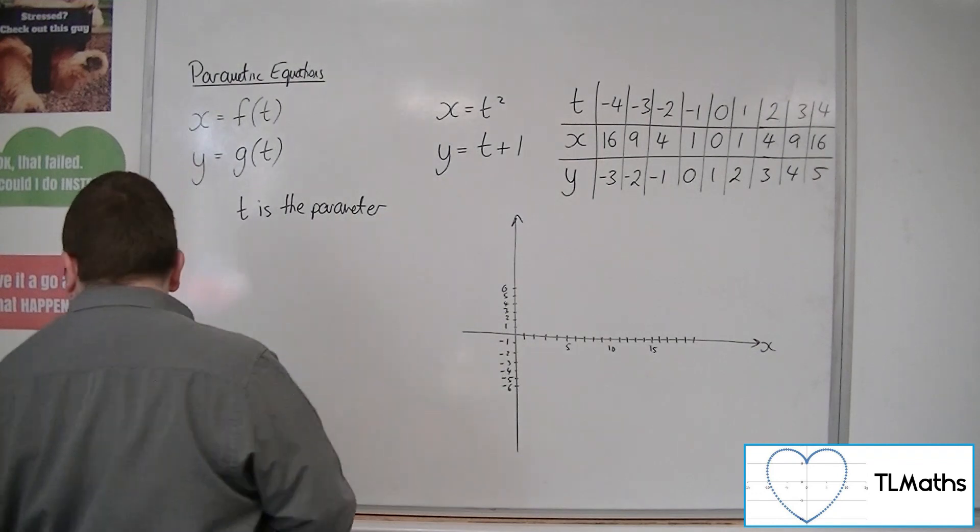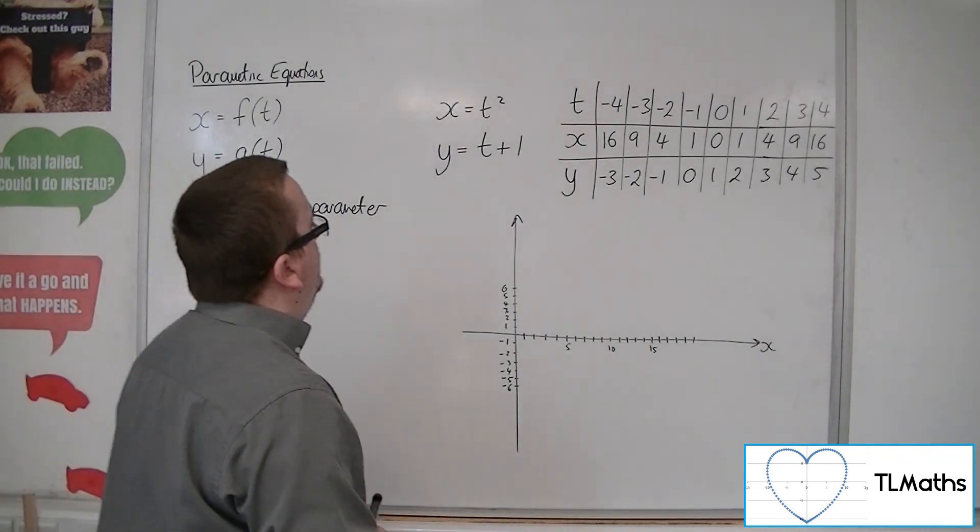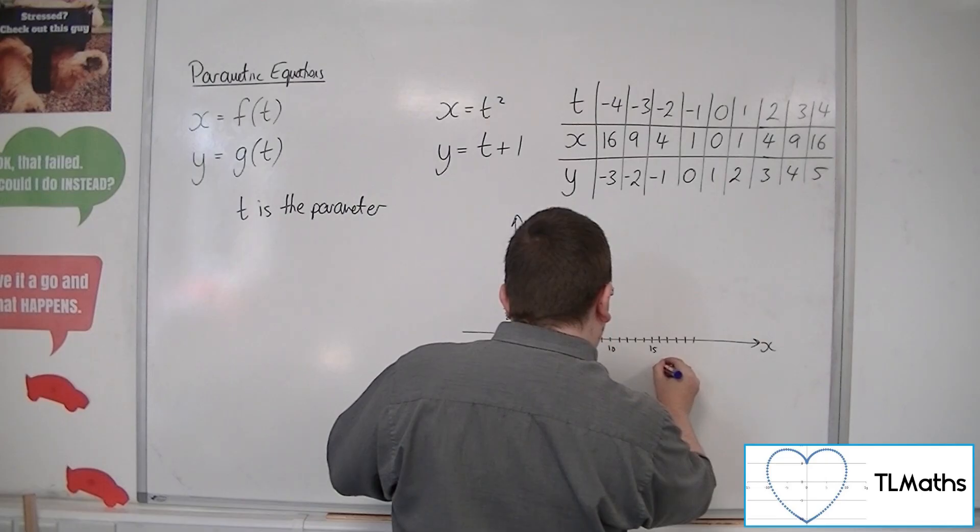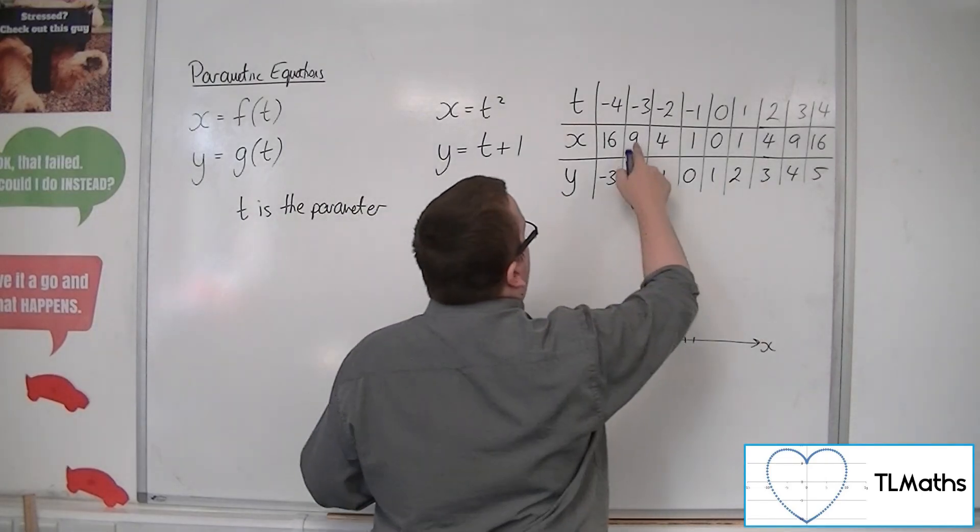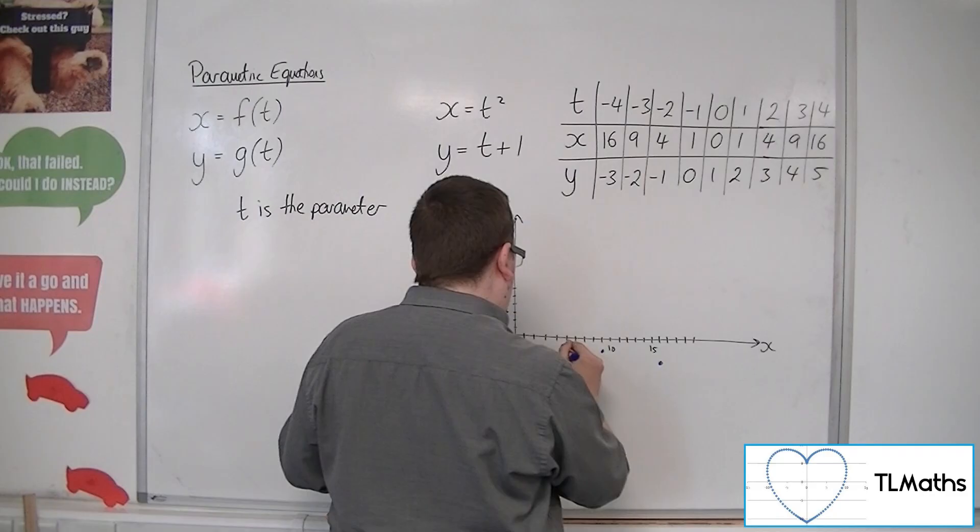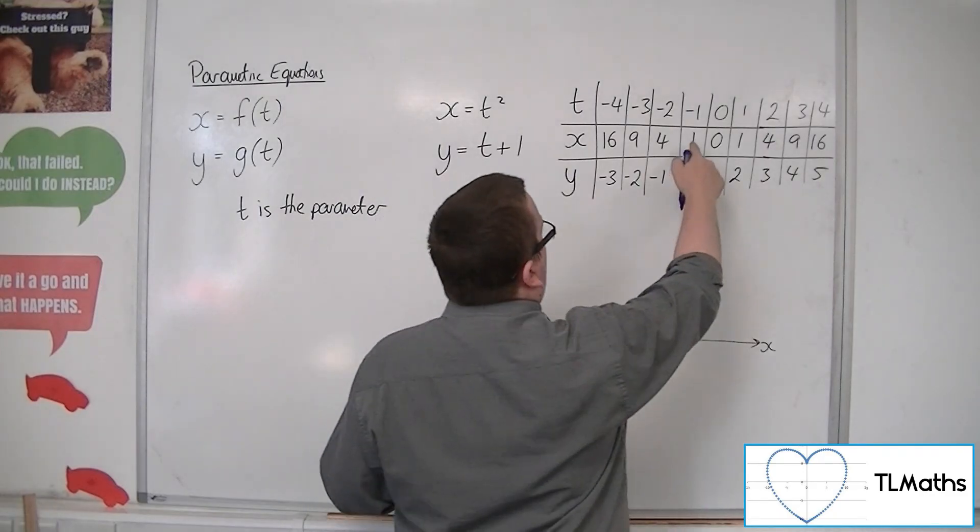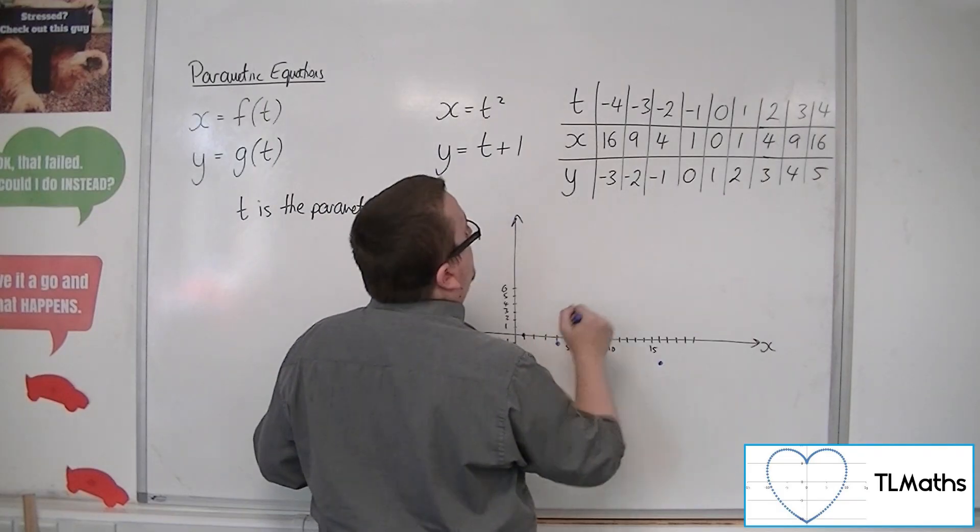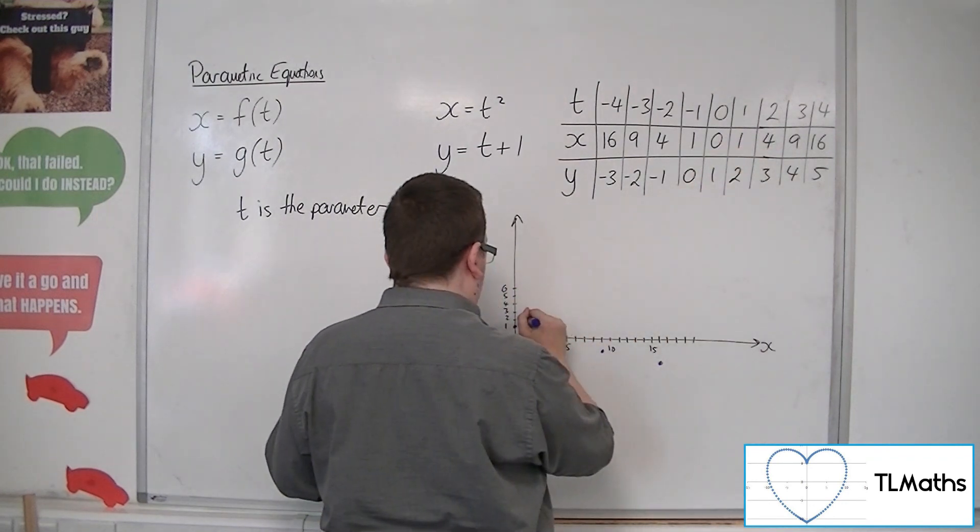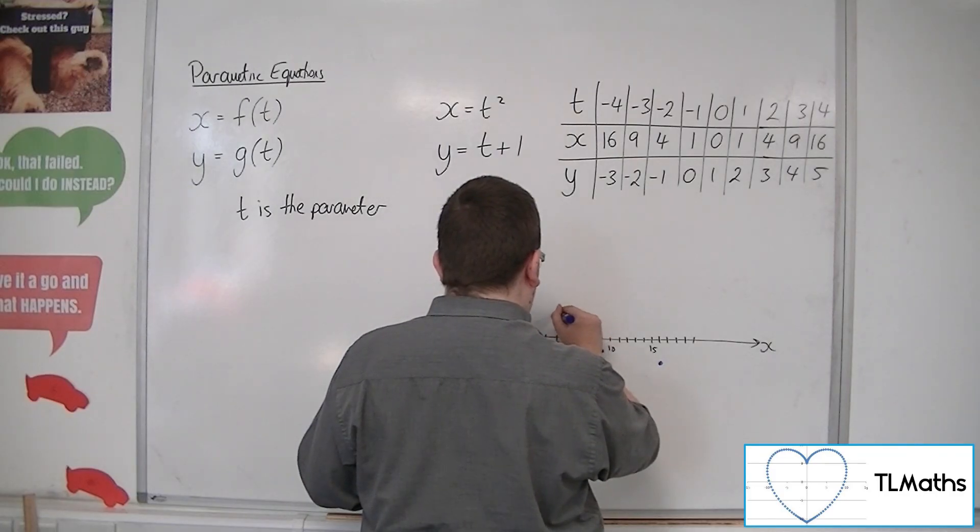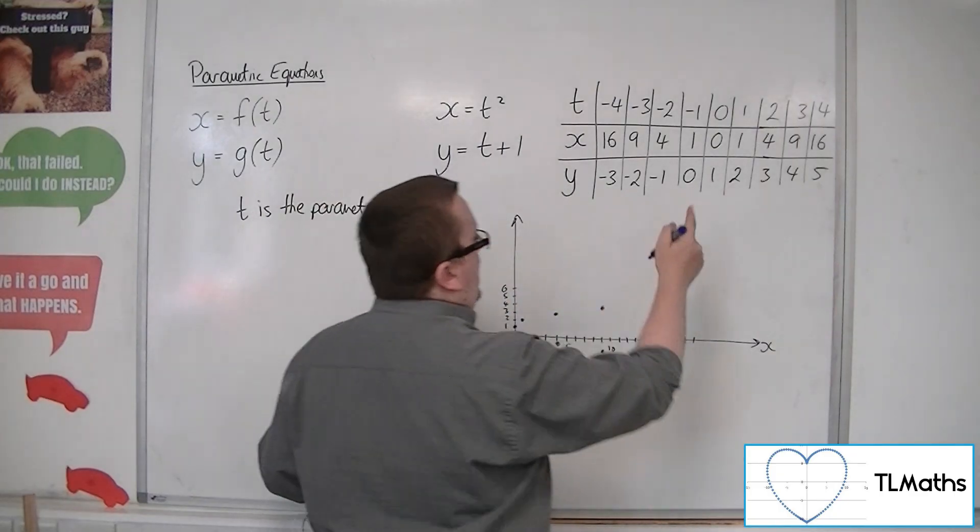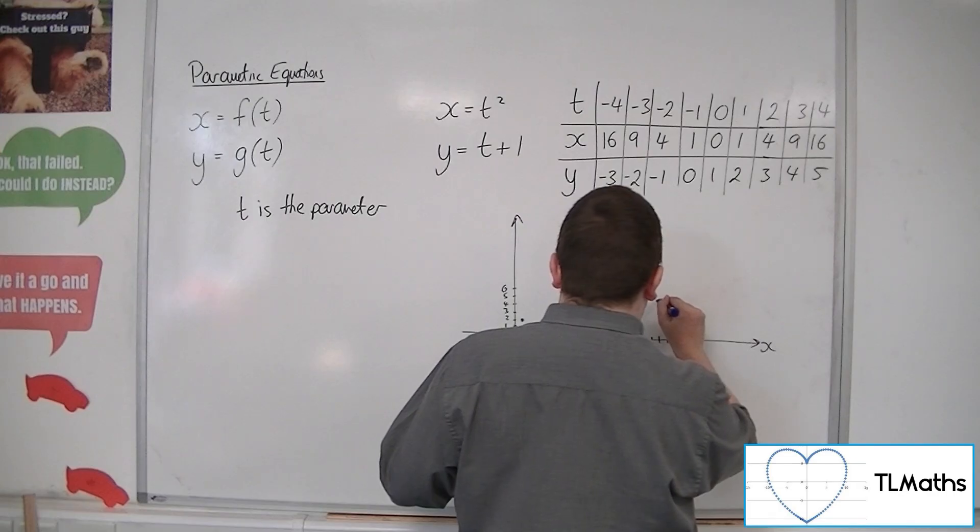So let's see. We've got the point 16, minus 3, somewhere about there. Then 9, minus 2, about there. Then 4, minus 1, about there. Then 1, 0 would be there. Then 0, 1, which is there. And then 1, 2, which is there. And then 4, 3, which is there. And 9, 4, about there. And 16, 5, about there.